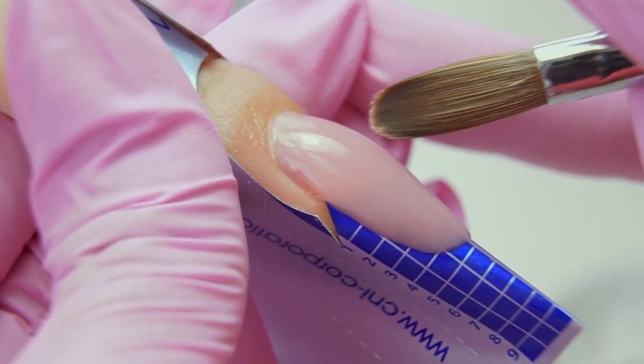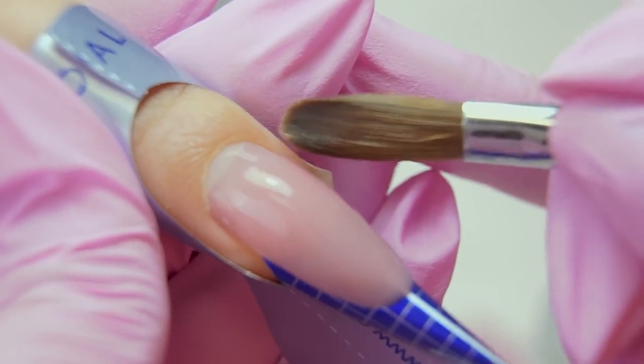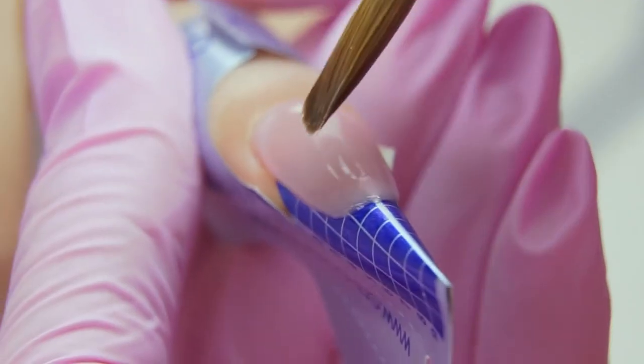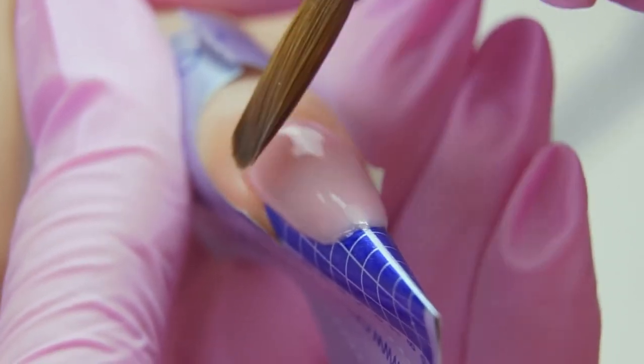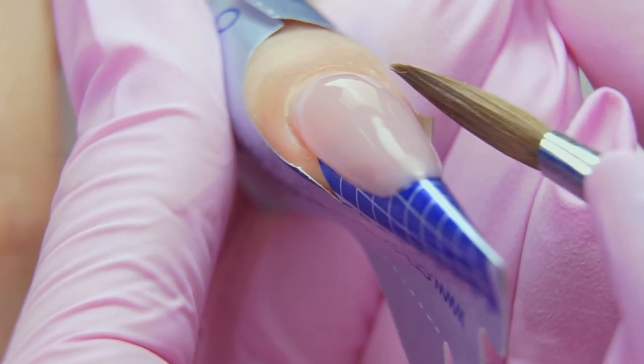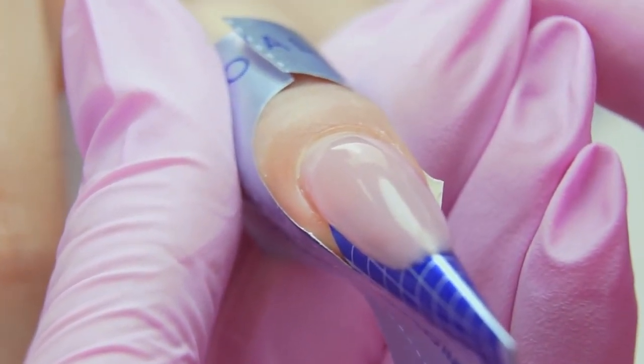I don't recommend sculpting with one large drop, because such a thick layer in the center of the nail simply won't cure in the lamp and will be wet inside. I'm always checking the arch so there are no bumps. You should lay out the material gently and smooth it out, because it will save you time when filing. Curing in the lamp for 20 seconds.